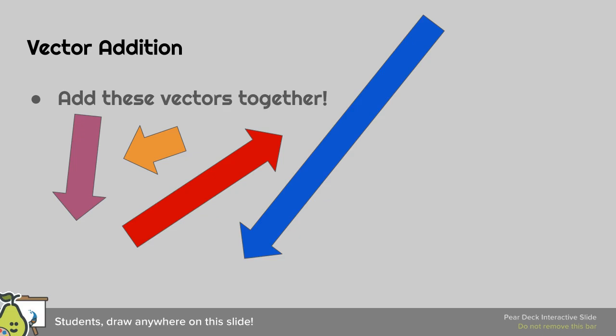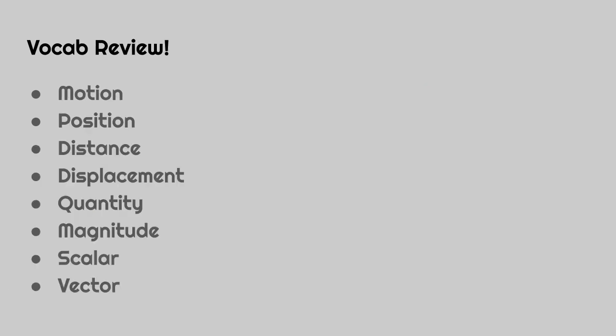If we added these together, then we would slide this one over here. We could do that one like that, then we could do this one like that, and then this one like that. We could have our resulting one be this direction and that length. Vocabulary review: motion, position, distance, displacement, quantity, magnitude, scalar, and vector.